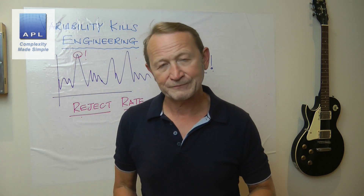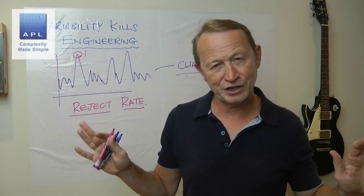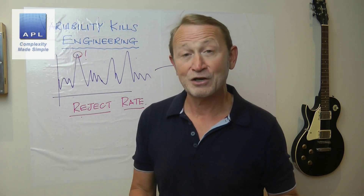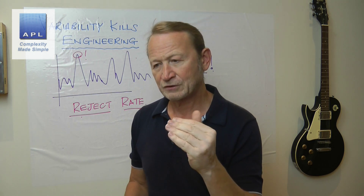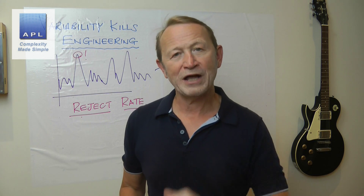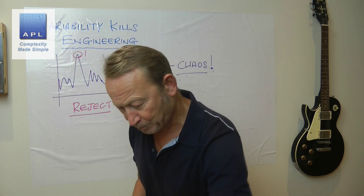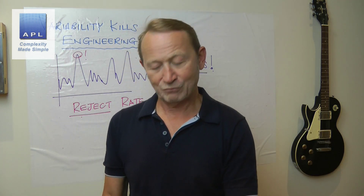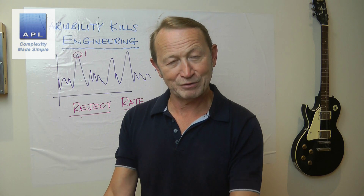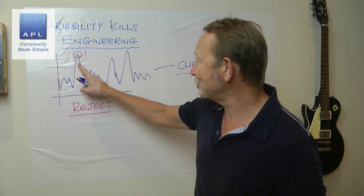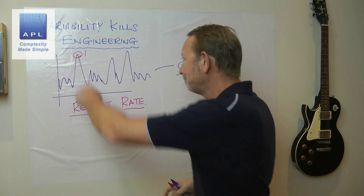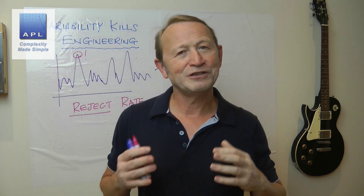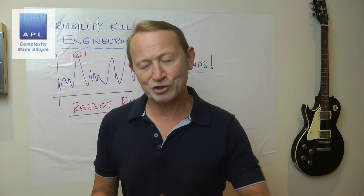Now think about it: even if the engineer does nothing — the engineer turns up with his allen keys, full of enthusiasm ready to fix the problem — even if the engineer does nothing, what will happen tomorrow? You'll roll the variables again, and because this is an extreme result, you're probably going to get a much better number. And that's if you do nothing. But of course you don't do nothing, do you, as an engineer — you turn up.